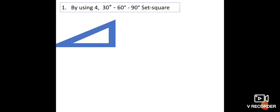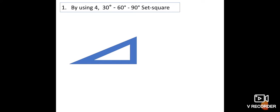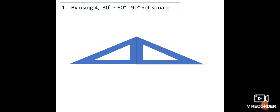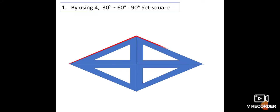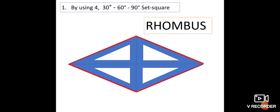The next figure is made by using four 30°-60°-90° set squares. Here also, opposite sides are equal. Its name is rhombus. So the names to remember are: first, rectangle; then square; third, parallelogram; and fourth, rhombus.